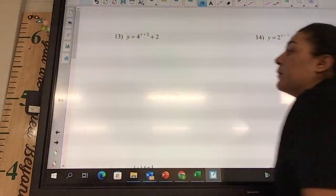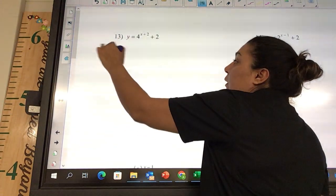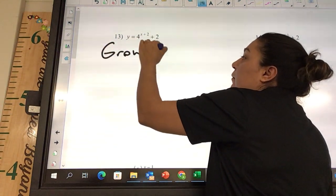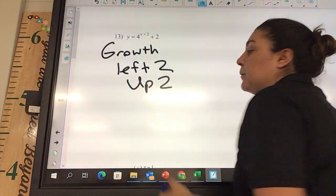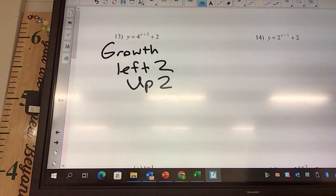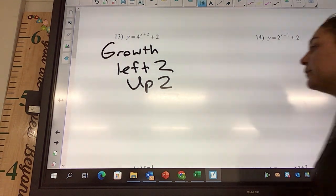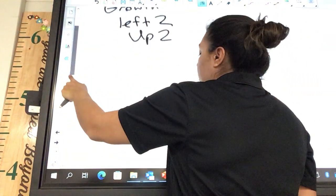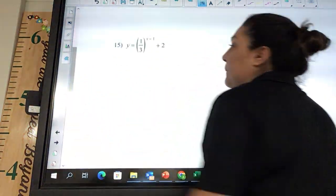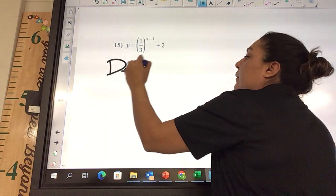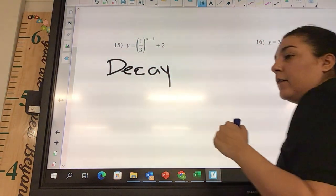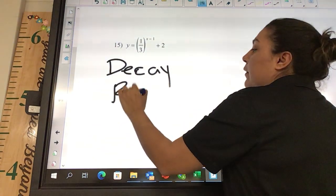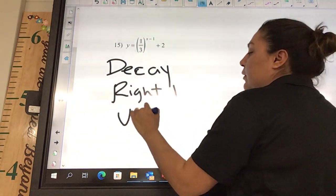Okay, problem 13, growth or decay? Growth. Left 2. Up 2. Good. Leon, problem 15, is that growth or decay? You wouldn't know the right page, huh? No, but it's decay. Decay. Good job, Leon. Left, and then it's up. Right 1, up 2. Good.